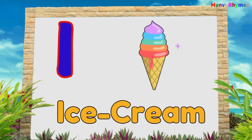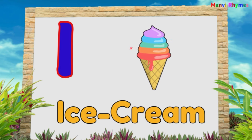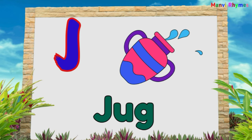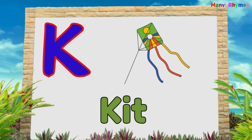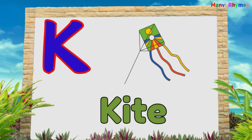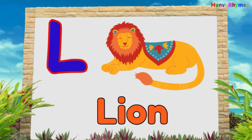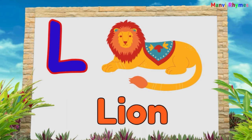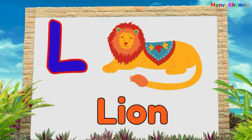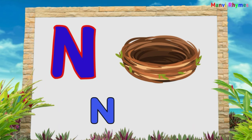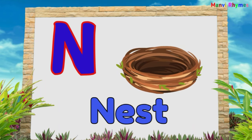I for Ice Cream. J for Jug. K for Kite. L for Lion. M for Monkey. N for Nest.